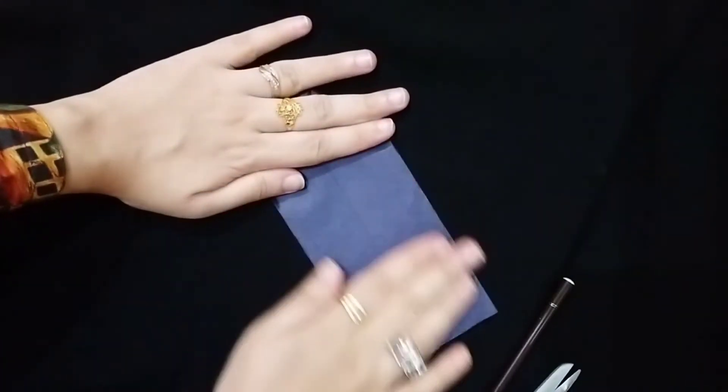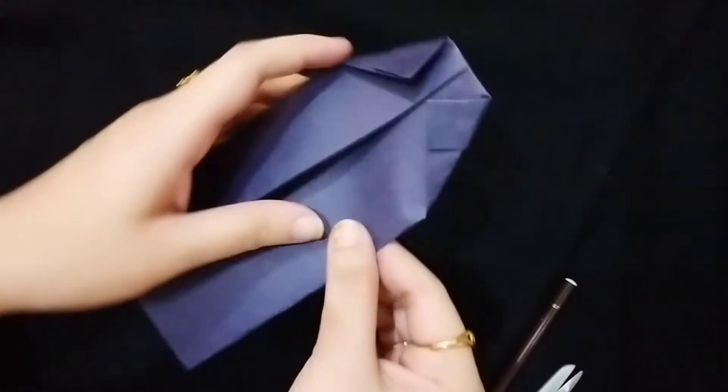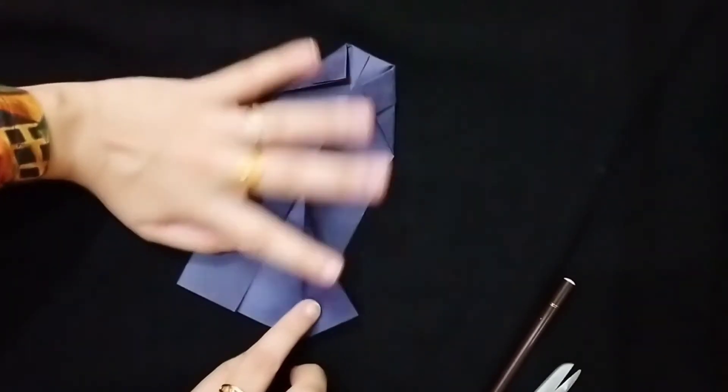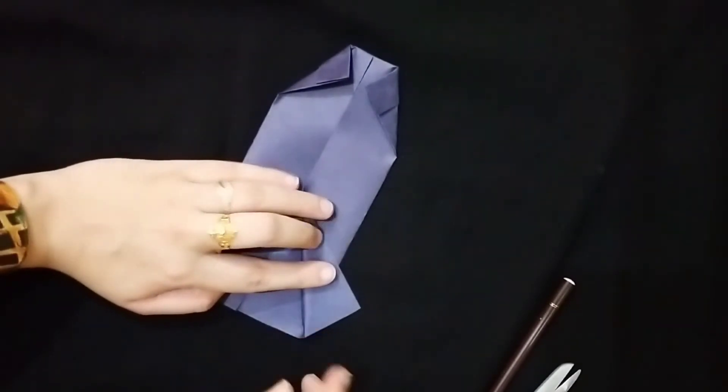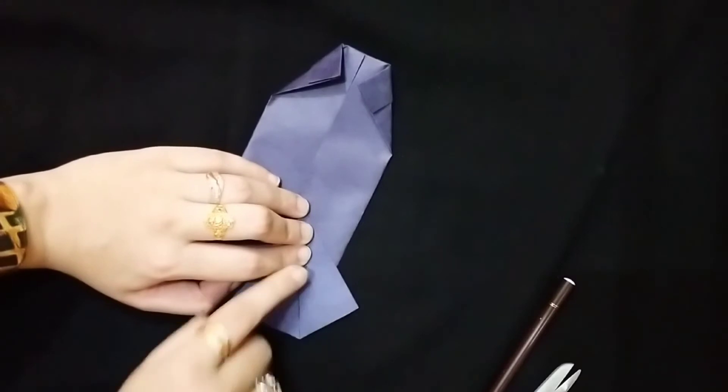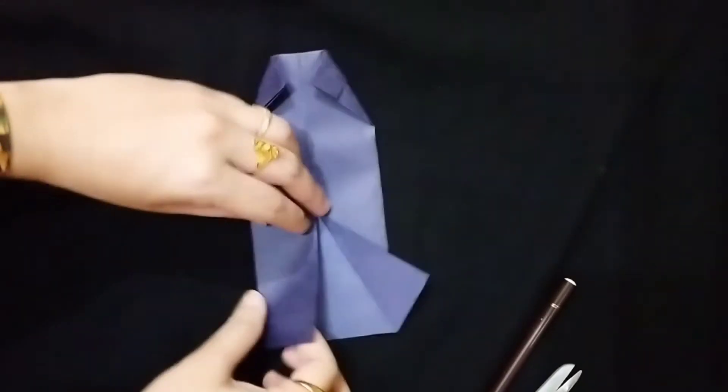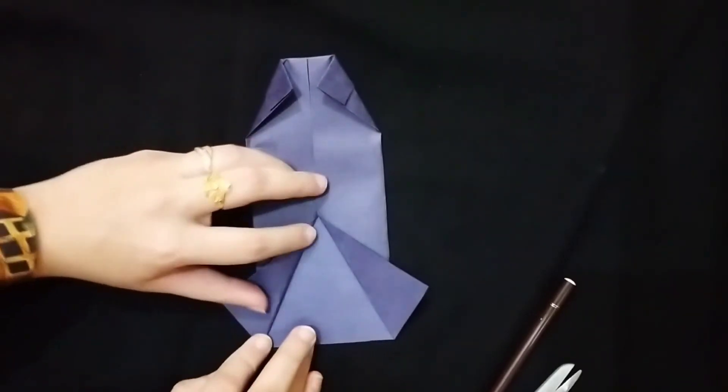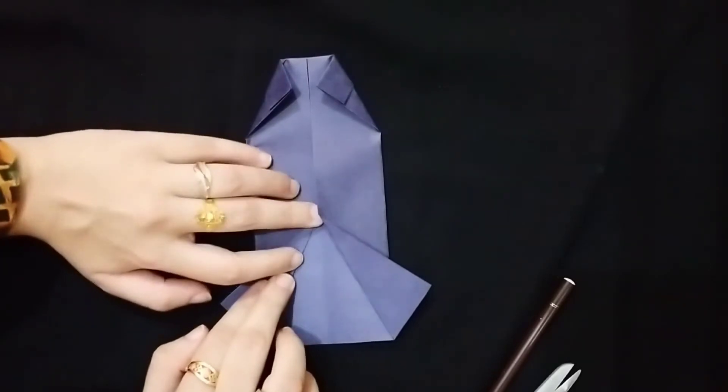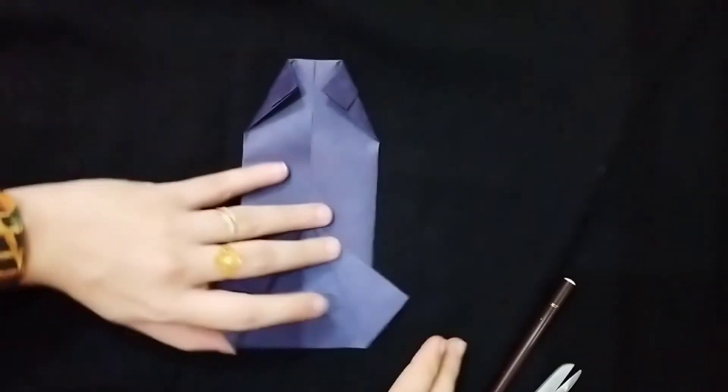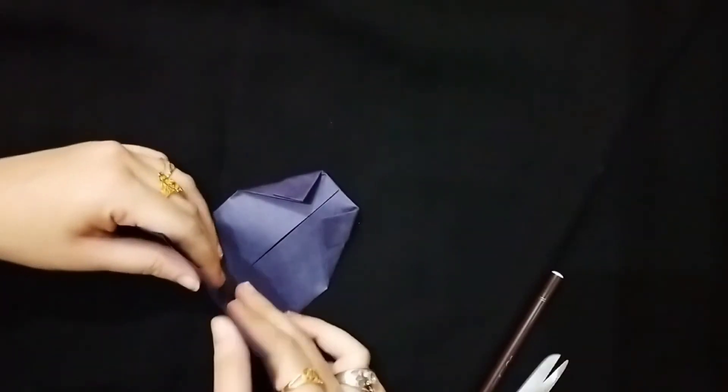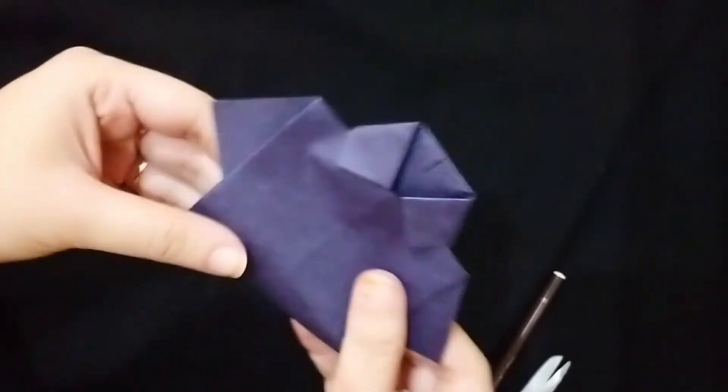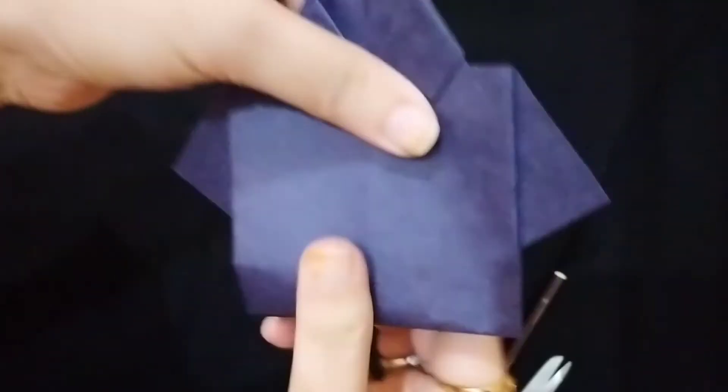We have the collar. Now we will need another fold for the sleeves. Make a fold like this. Try to take it out as much as possible because this is going to be visible in front as a sleeve. Now we are just going to tuck it under the collar like this and give it a final fold at the bottom.